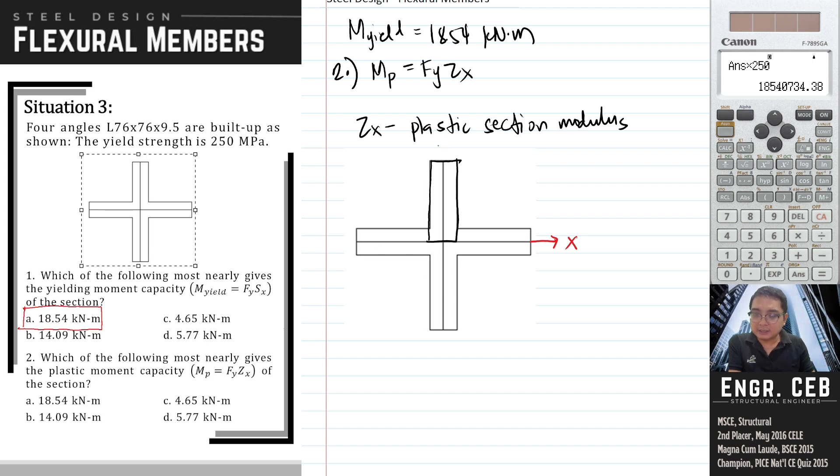For the first rectangle, since we have two thicknesses here, the dimension of this one is 2 times 9.5, and that is 19. Its height is simply 76 mm. For these rectangles, we have already computed the dimension of these rectangles. This is 66.5, and then it has a thickness of 9.5.